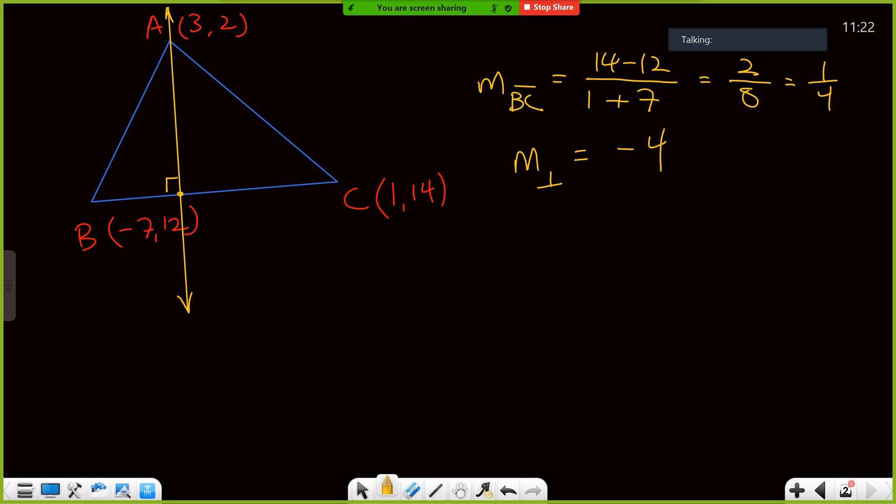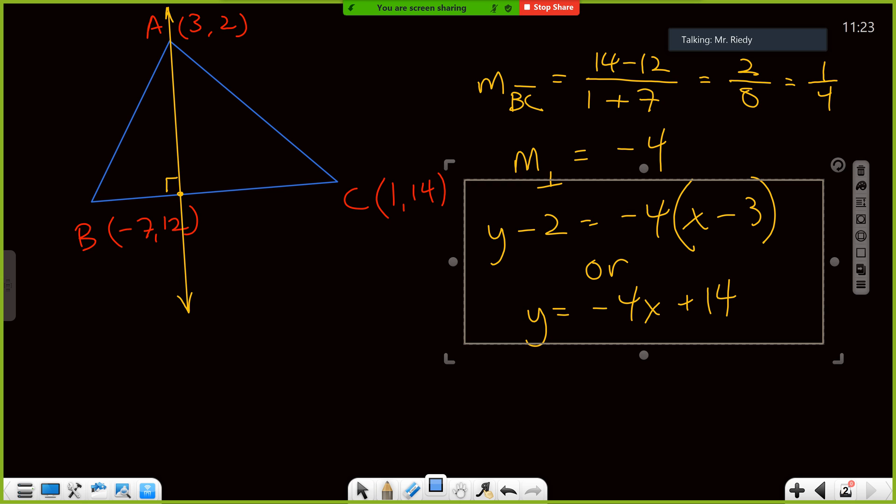Questions so far? Going once, going twice. So, good. Again, two things we need for the equation of a line. A point and a slope. I have a slope. I need a point. Well, if I look at my picture, I know the point. The point is A. Not calculating any midpoints. Not needed. Y minus 2 is equal to negative 4 times X minus 3. Or if you prefer, Y is equal to negative 4X plus 14. And I'm going to put a rectangle around that because I would need that later to find the orthocenter.